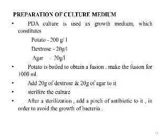Preparation of the culture medium: PDA is used as a growth medium, constituting potato at 200 g per litre, dextrose at 20 g per litre, and agar at 20 g per litre. The potato is taken in the form of a decoction for 1000 ml, then 20 g of dextrose and 20 g of agar are added. The medium is sterilized and a pinch of antibiotic is added to prevent bacterial growth.